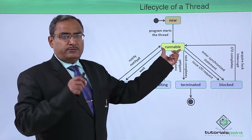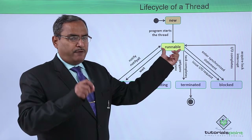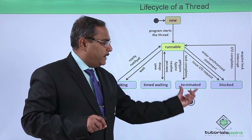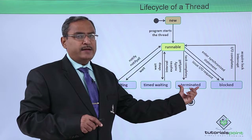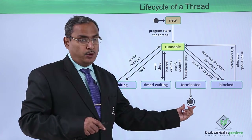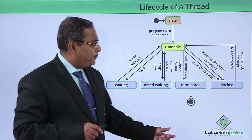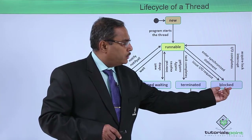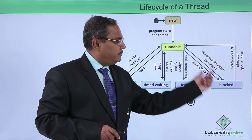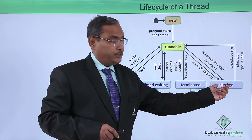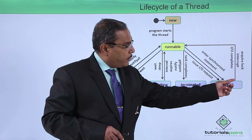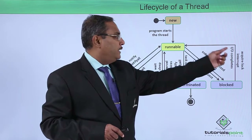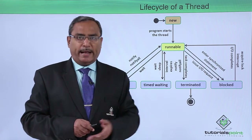When the thread completes its task, it will be found in the terminated state, also known as the dead state, and the thread expires there. Due to some IO request, or entering a synchronized statement, a thread might be found in the blocked state. When the acquired lock interrupt or IO completion is obtained, the thread will be found in the runnable state again.